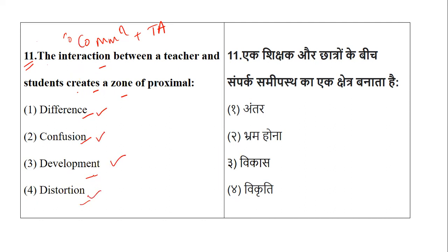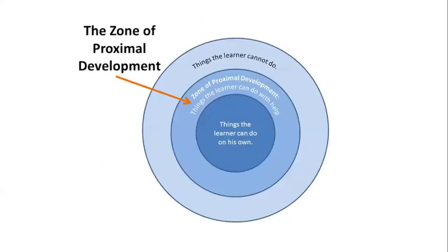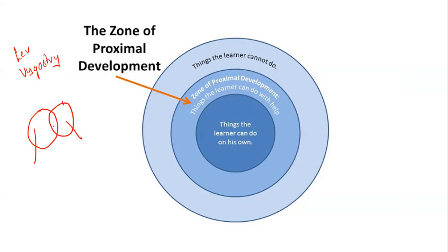If you know the concept of Zone of Proximal Development, the answer will be clear to you. Let me first explain the zone. This concept was brought by Vygotsky. He introduced a concept called Zone of Proximal Development. In some books this is shown as the intersection of two circles. One part represents what a particular student knows, certain things he does not know, and what he wants to learn. In such cases, his peer groups help him to understand what he does not know.